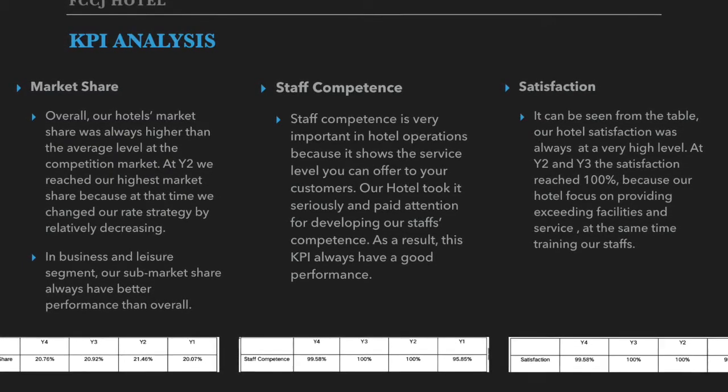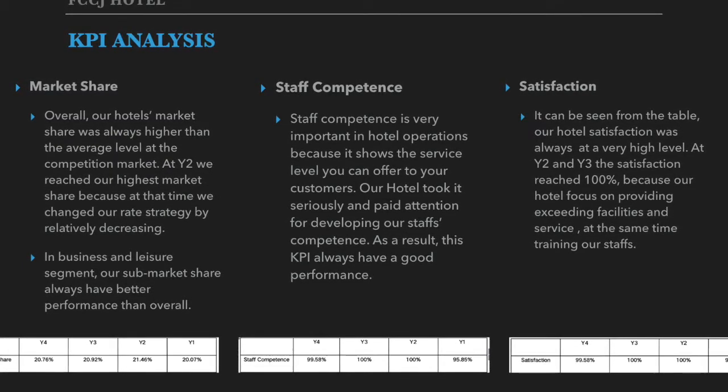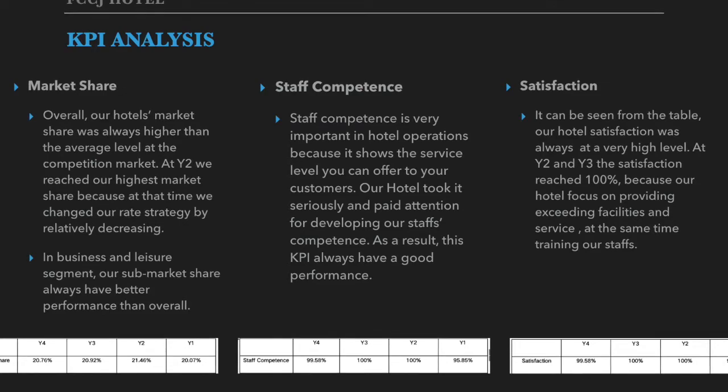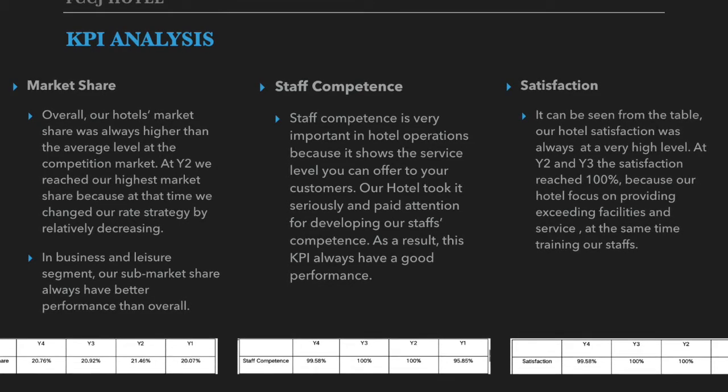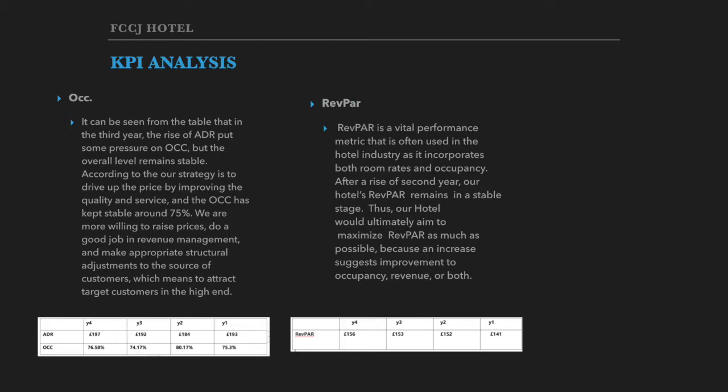The third one is satisfaction. It can be seen from the table that our hotel satisfaction was always at a very high level. Regarding occupancy, it can be seen from the table that in year three, the rise of the ADR puts some pressure on our occupancy, but the overall level remains stable at 75%.